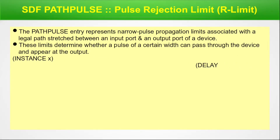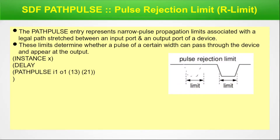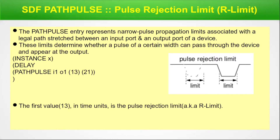Here is the example, which was shown in the main episode 9 of the static timing analysis series. In case you have not seen that particular episode, please go ahead and watch it. Here we have the infographics for the pulse rejection limit. You can see that two limits have been defined. Comparing with the values, the first value — 13 time units — is the pulse rejection limit, also known as r-limit.